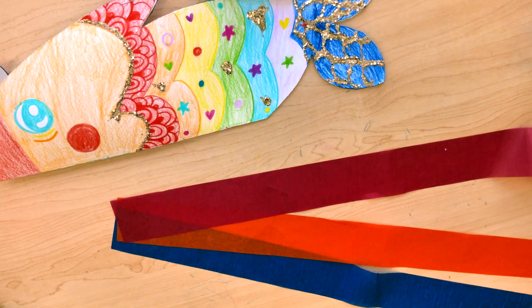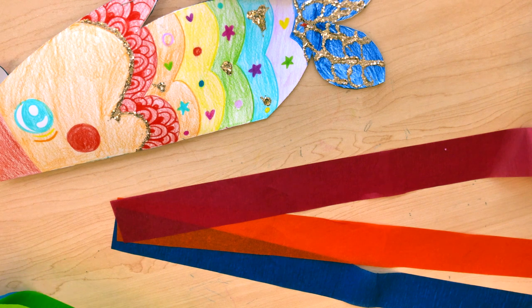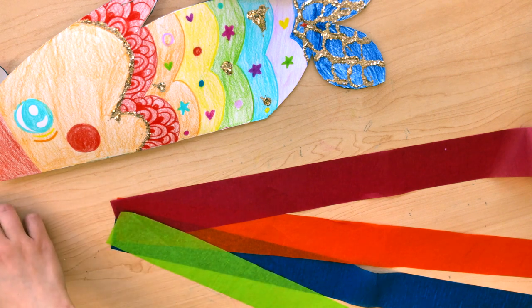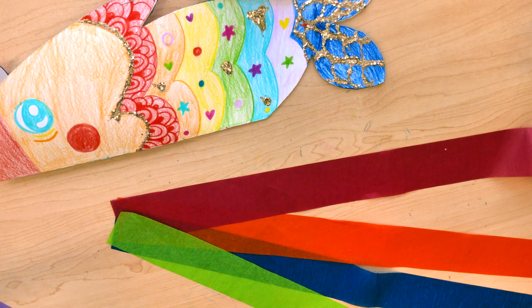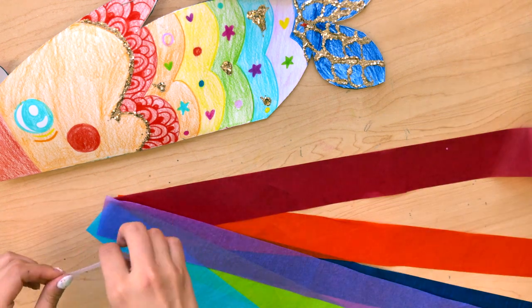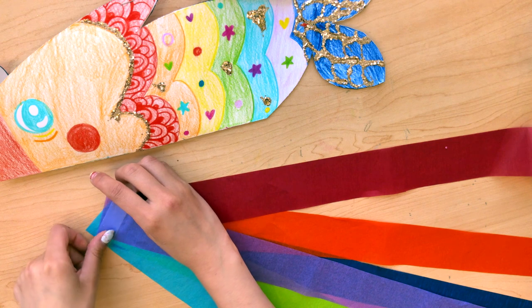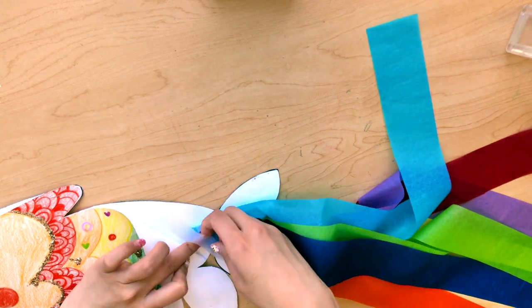Next, I'm going to get my tissue paper and I just cut it into thin strips. I'm going to layer them on top of one another and tape all the pieces together and tape it down. Put it inside where the tail is.